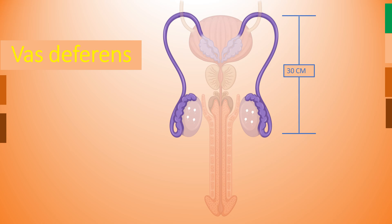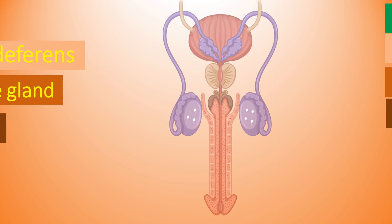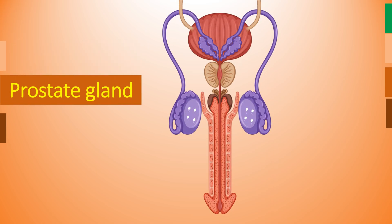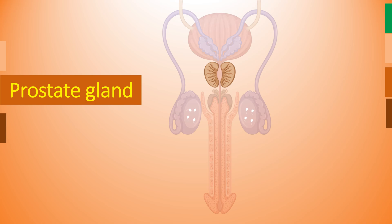Vas deferens opens into the urethra and helps to transport mature sperm to the urethra. The prostate gland, as indicated in the figure, is situated below the urinary bladder and its size is about that of a walnut.